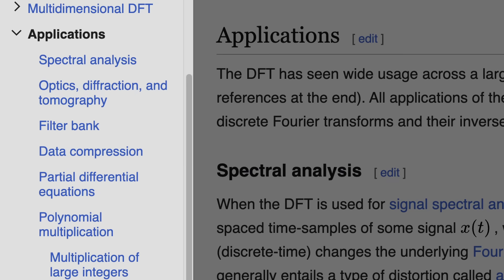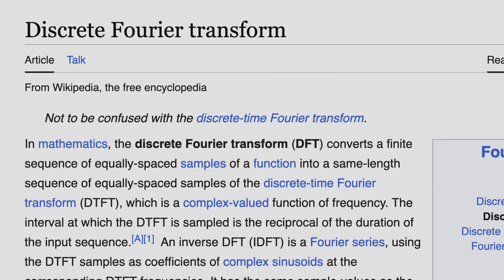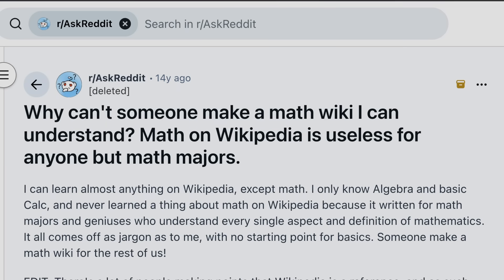But the article never mentions sound, radio, temperature, or images in the Applications section. I could go on and on nitpicking this article like a petty drama YouTuber, but I wanted to show you how frustrating it can be trying to learn math from Wikipedia. I'm definitely not the first person to say this. People seem to think Wikipedia is only for math majors, but I can assure you this is not the case.